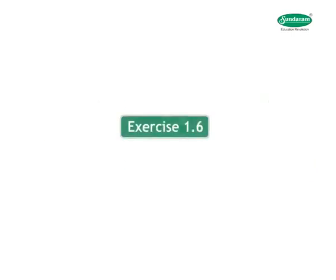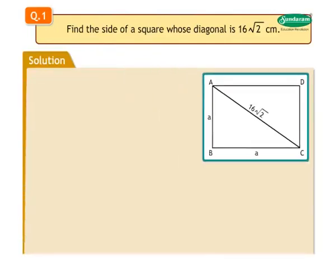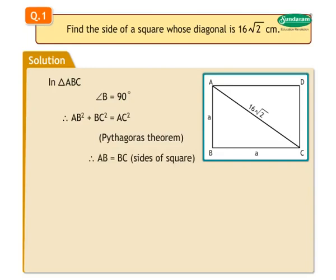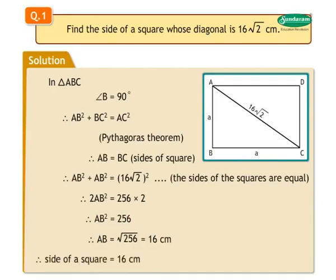Exercise 1.6, Question 1: Find the sides of a square whose diagonal is 16 root 2 centimeters. Solution: In triangle ABC, angle B is equal to 90 degrees. By Pythagoras theorem, AB square plus BC square is equal to AC square. Since AB is equal to BC as sides of the square, 2 AB square is equal to (16 root 2) square is equal to 512. Therefore, AB square is equal to 256, so AB is equal to 16. The sides of the square are 16 centimeters.